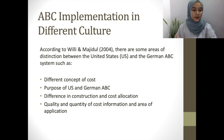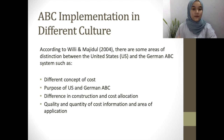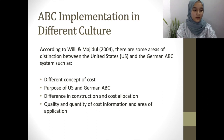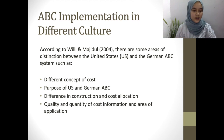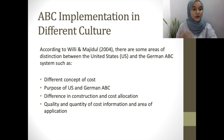Between those two countries, they have found some areas of distinction. For example, the different concept of cost, the purpose of the U.S. and the German ABC system, the difference in construction and cost allocation, and the quality and quantity of cost information and the area of application. The main argument is that cultural differences create obstacles for implementation of successful accounting technologies and practices, and the accounting treatment needs to be modified to follow the culture in that country.